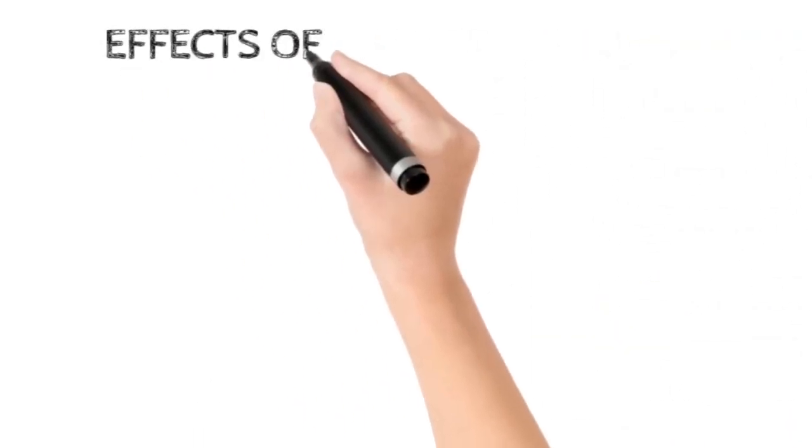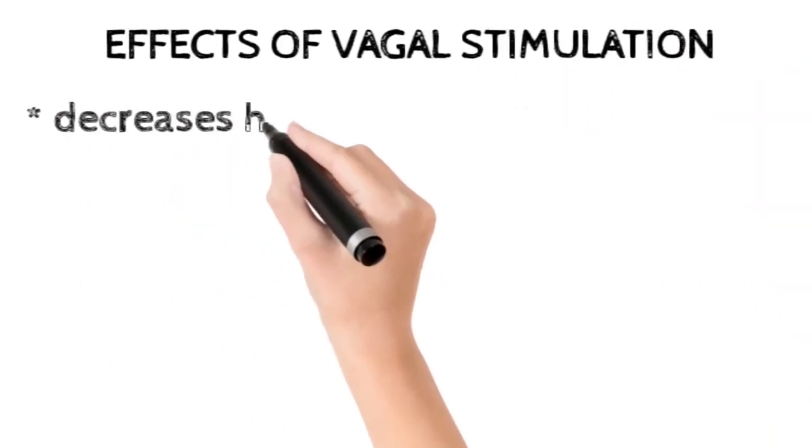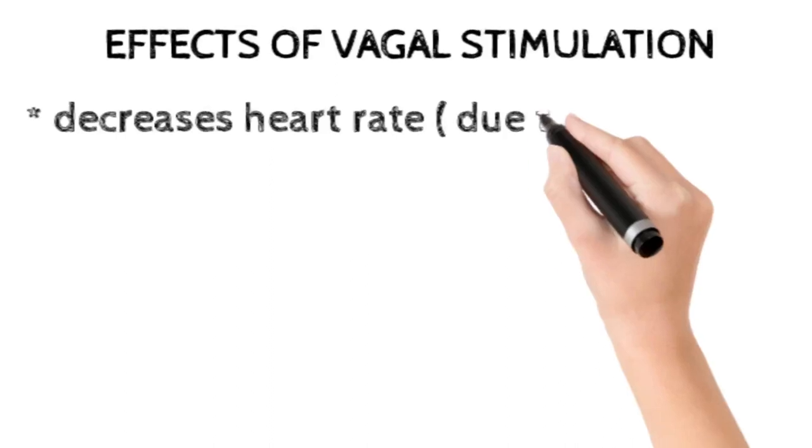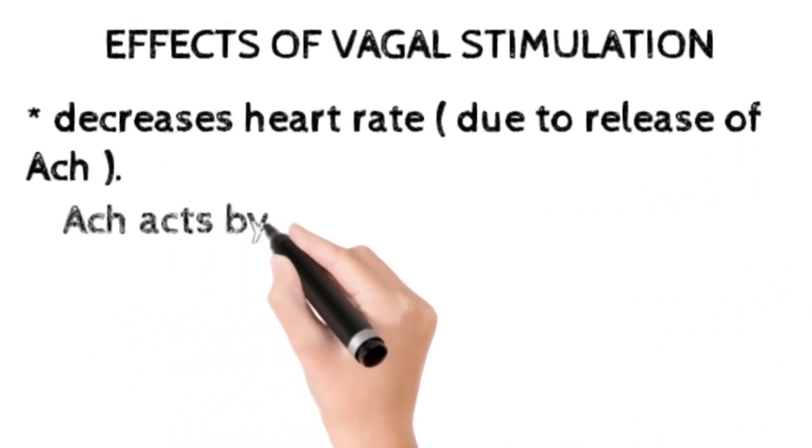Effects of vagal stimulation: Vagal stimulation of the heart mainly decreases heart rate due to the release of acetylcholine. Acetylcholine acts by two mechanisms.